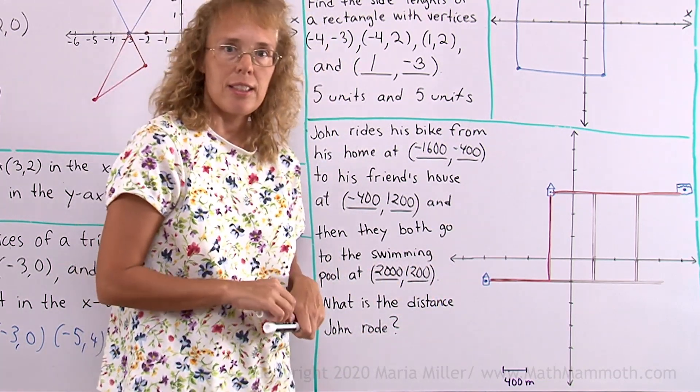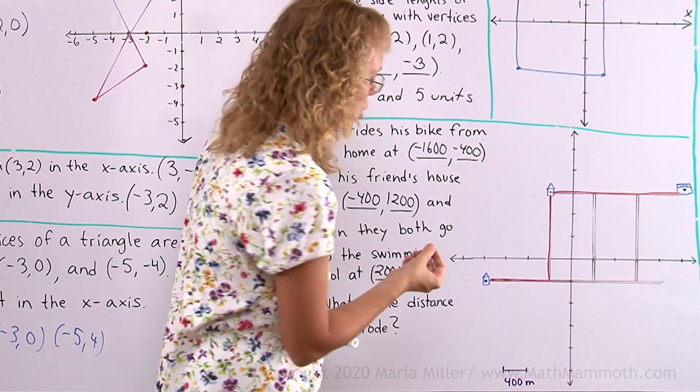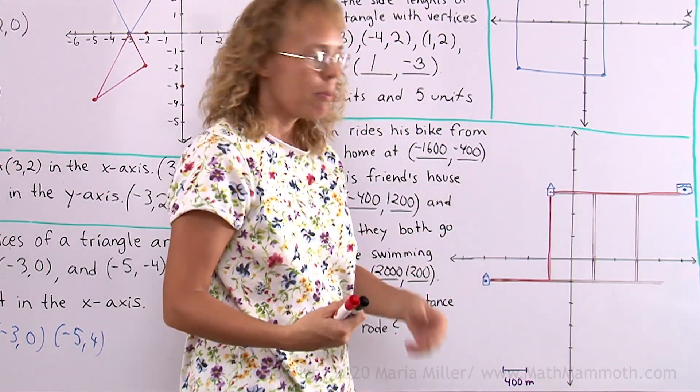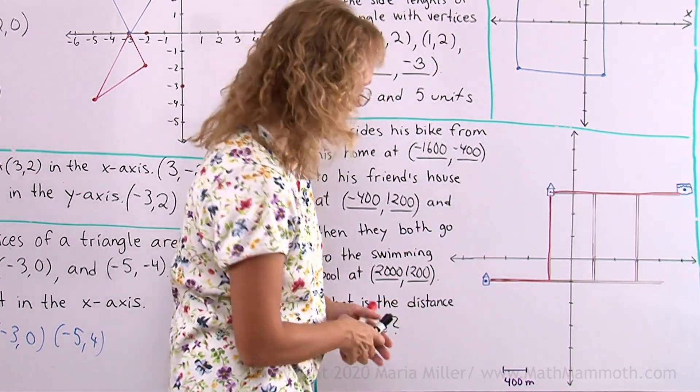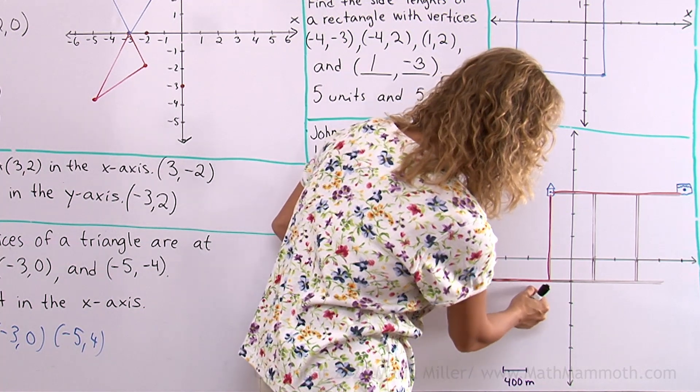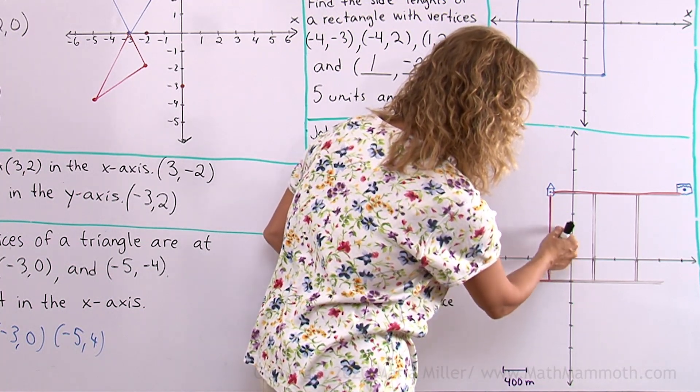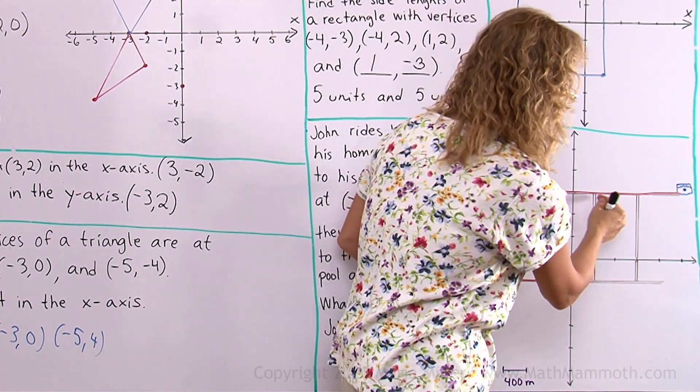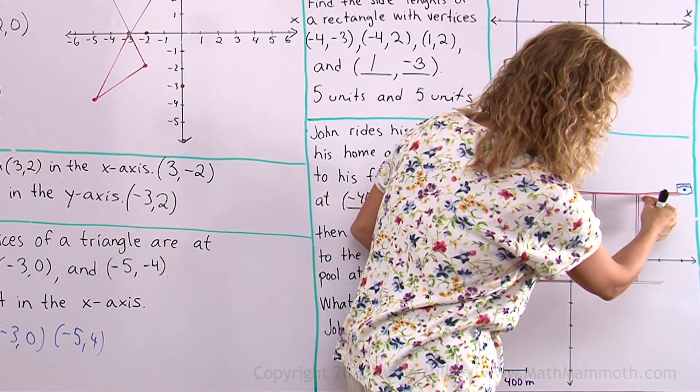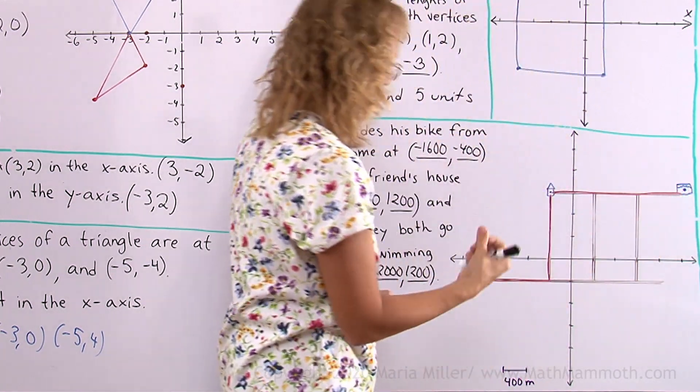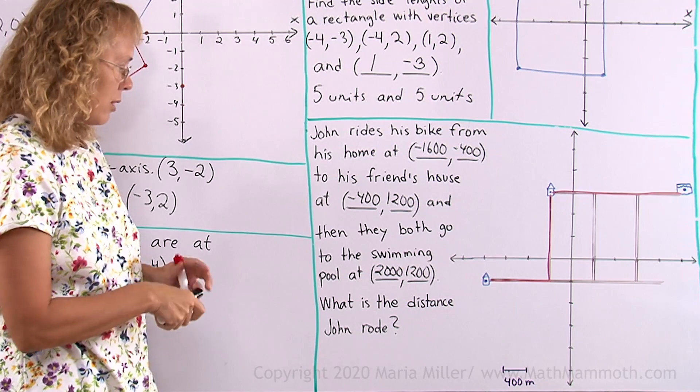What's the distance that he rides? Well, we just check how many units he rides here and then multiply that by 400 meters. Here he would go one, two, three, and then four, five, six, seven, eight, nine, 10, 11, 12, and 13. 13 units times 400.